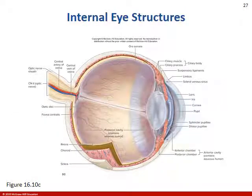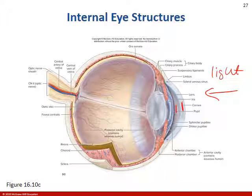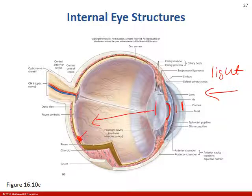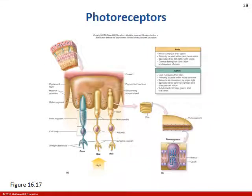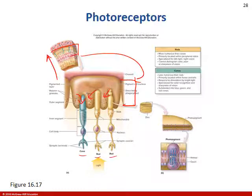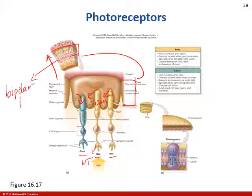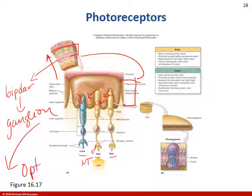Before discussing the physiology of rods and cones, make sure you understand the direction of light. Light passes through: cornea, aqueous humor in the anterior cavity, then focuses through the pupil onto the lens, through the vitreous humor, and hopefully the image focuses on the retina. Once light reaches the retina, it excites the photoreceptors — rods and cones — causing channels to open, neurotransmitters to be released, those synapse with bipolar cells, then ganglion cells, and all the ganglion converge to form the optic nerve.